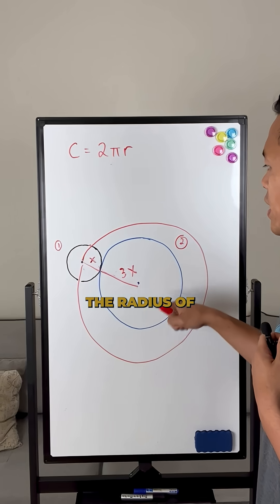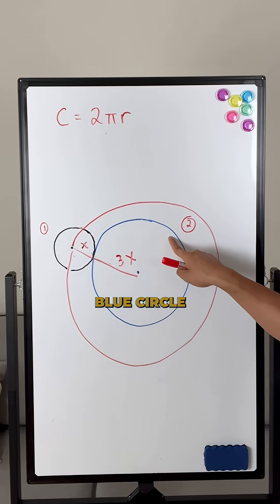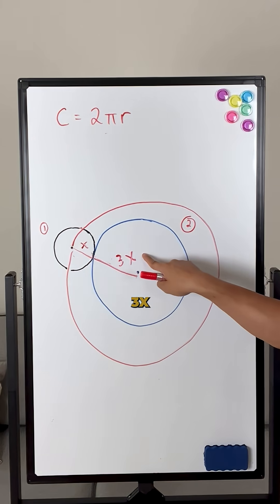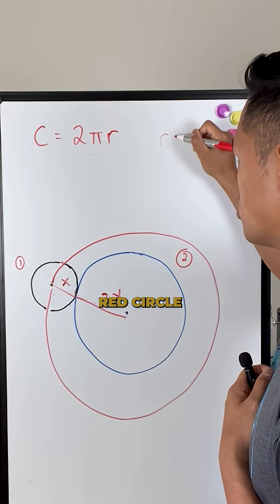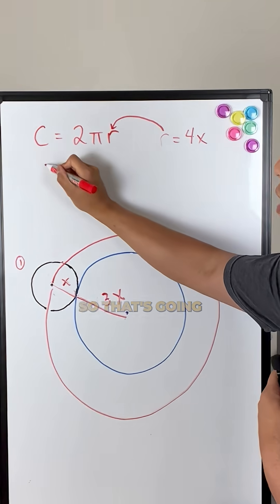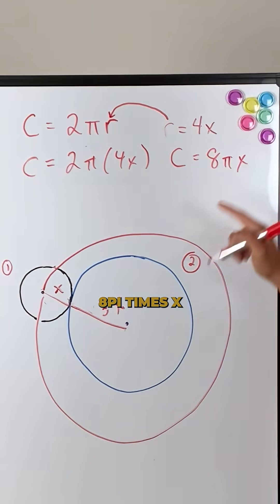We know that the radius of the red circle is simply the radius of the blue circle plus the black circle. So that's three X plus X. So that means that the radius of the big red circle is four times X, which gives you C equals eight pi times X.